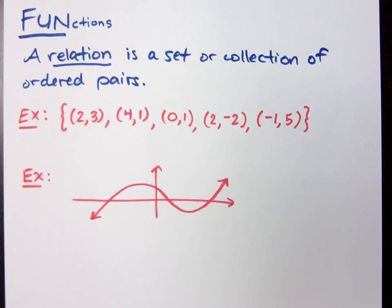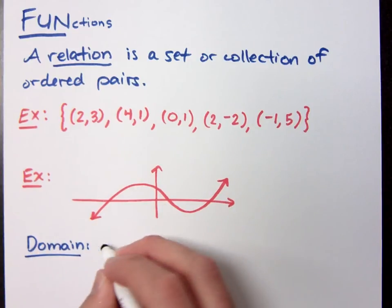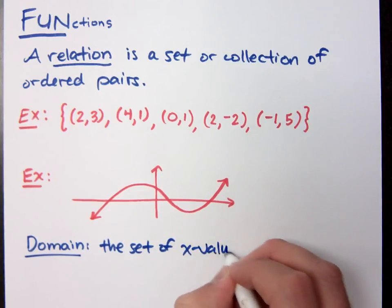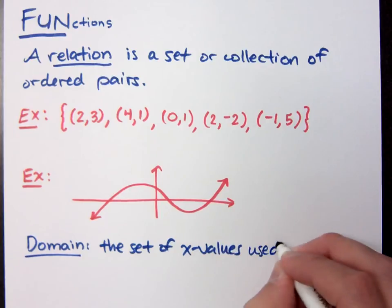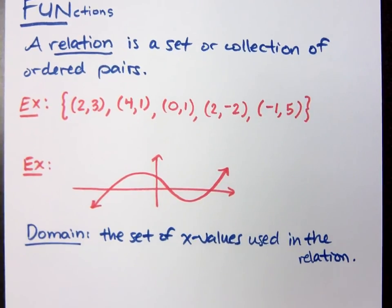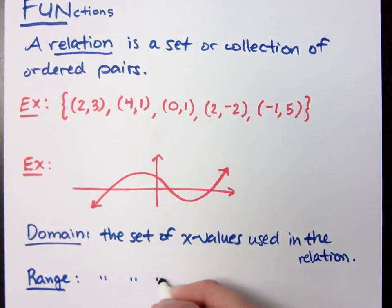Now, when we talk about relations, we want to talk about the domain. And the domain is the set of x values used in the relation. On the other side of that, you have the range. And the range is the set of y values used in the relation. So the domain connects with the x's, and the range connects with the y values.